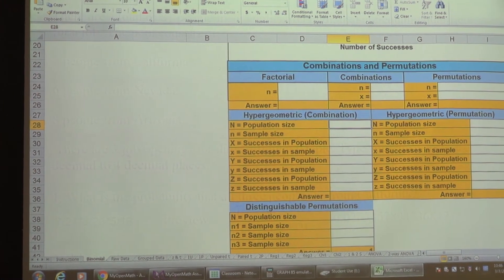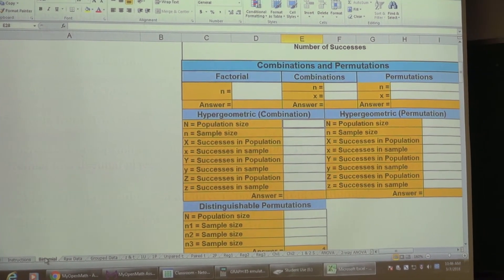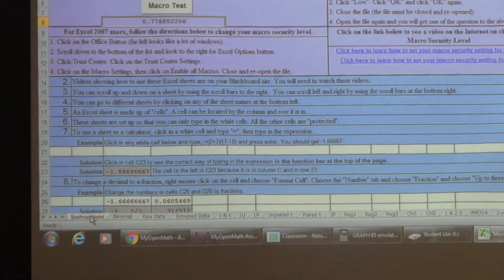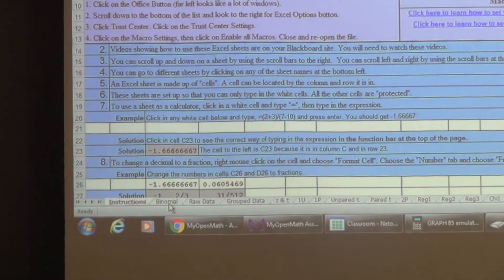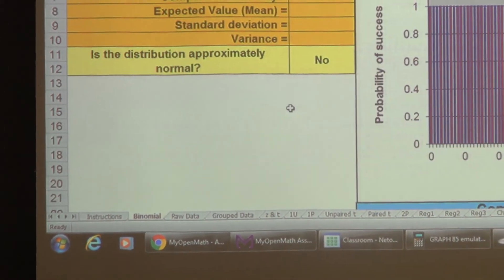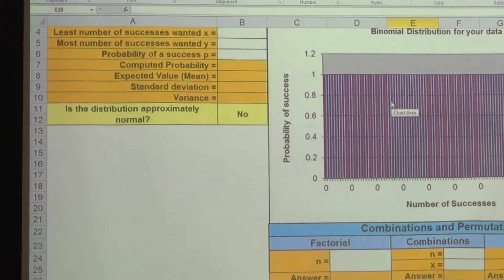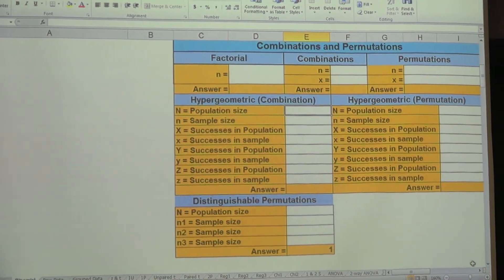This is the binomial sheet. When you open it up, you go to this sheet right here. When you first open it, you see this. Just click on this, and that's the binomial sheet. I got it really zoomed up here so we can record it, but you just scroll down.